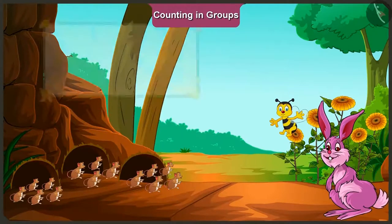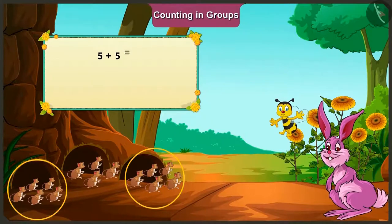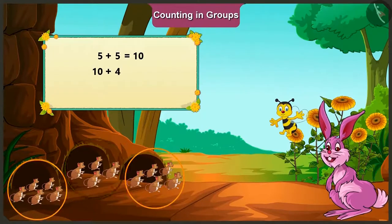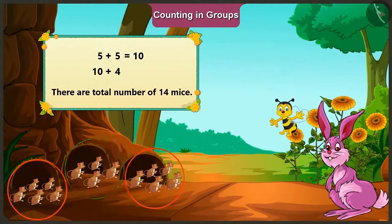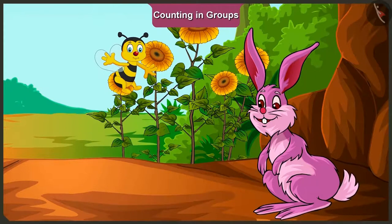If we find out the total number of mice in the two groups of five each, it would be ten. Then if we add the remaining four — that is, if we add four to ten — the total number of mice here will be fourteen. Well done, Bunny! You found out the number of mice with an easy method.